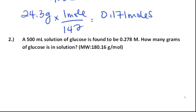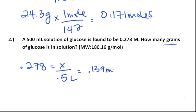In the next one, we have a solution of glucose that is 0.278 molar, and we need to find how many grams of glucose there are. So let's find how many moles there are first, by solving for X, and that is 0.139 moles of glucose,